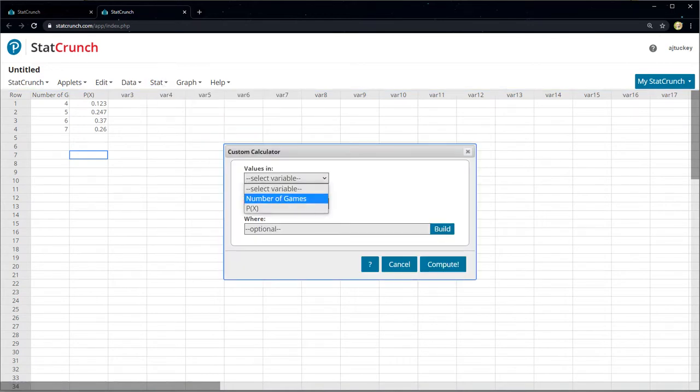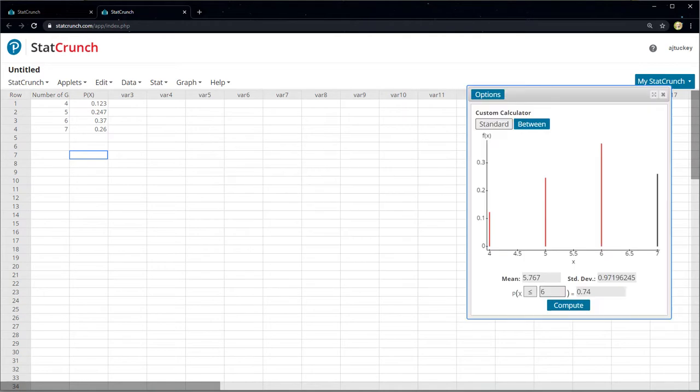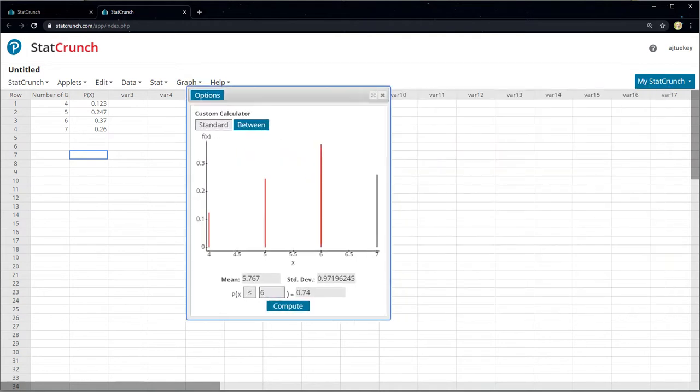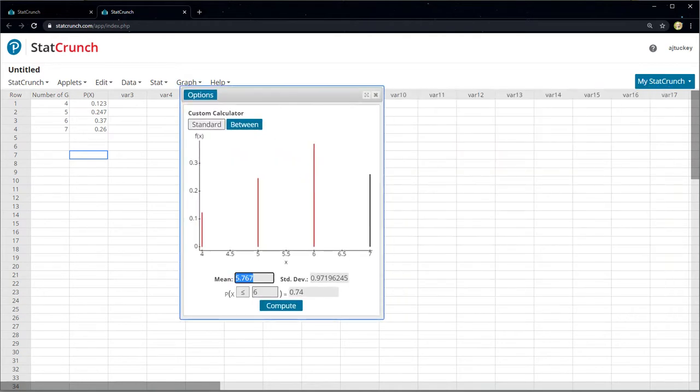So if you click on Custom, it'll ask you where your values are. So your values are your number of games, your weights are your probabilities, so your relative frequencies, and you click Compute.